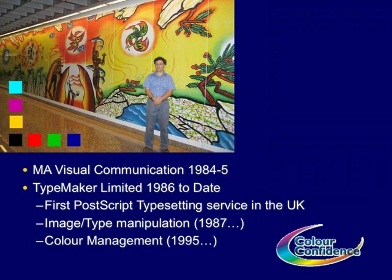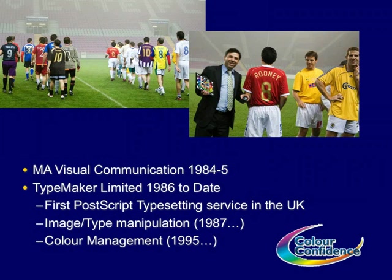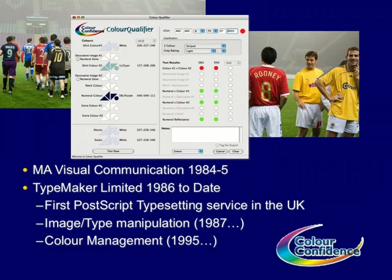Another specialist application we got involved in is making seven-colour separations for certain print processes, such as in the ceramics industry and enamel onto metal walls like those at the Singapore metro station. To achieve the equivalent of four-colour offset printing, you actually need seven colours, and we've developed software to make those seven-colour separations automatically. We also happened to be advisers to FIFA and UEFA on legibility of numbers on shirts relating to colours, developing specific software for checking that there's enough contrast between numbers and backgrounds without too much contrast on striped shirts, and even measuring the reflective quality of the numbers.